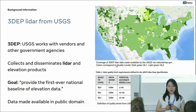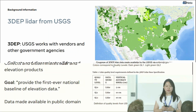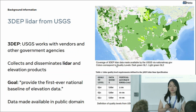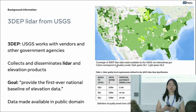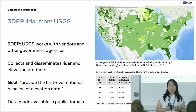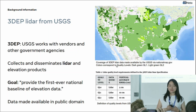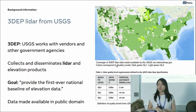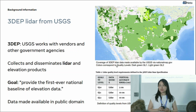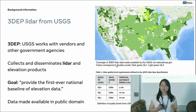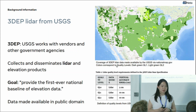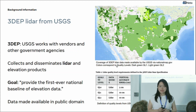USGS — the US Geological Survey — is a government agency. They have a program called the 3D Elevation Program, managed by USGS, and they work with different vendors and other government agencies to collect and disseminate LiDAR and elevation products. The elevation products include, for example, the raster DSM and the bare earth DEM.